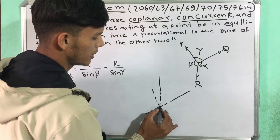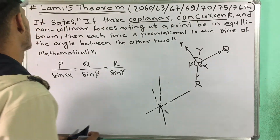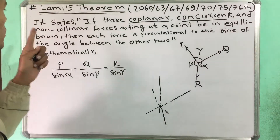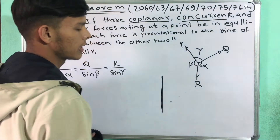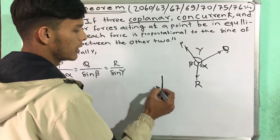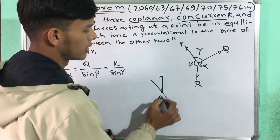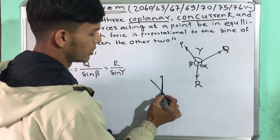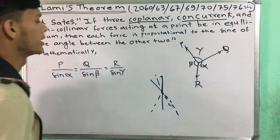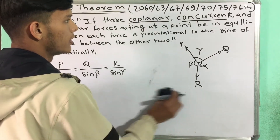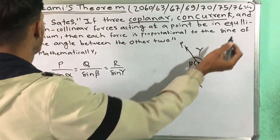When forces meet at a point, they are concurrent. There is also collinear force and non-collinear force. If forces lie on the same line they are collinear; otherwise they are non-collinear.